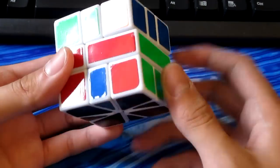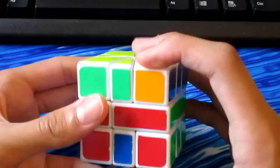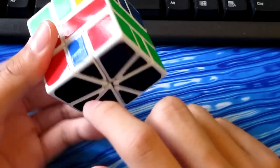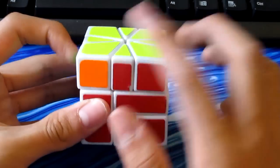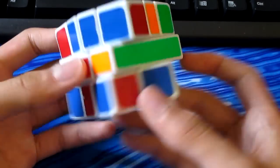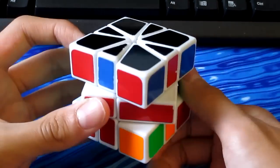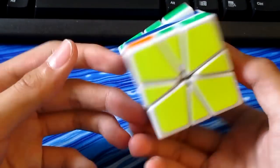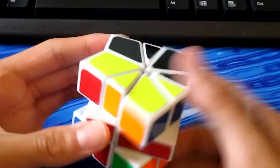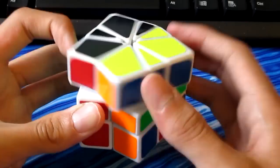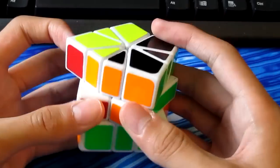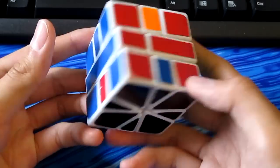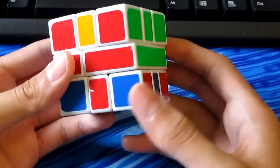Next is corner permutation. On the bottom face, there's no corners to permute since they're all good. But then the top face, you need to permute these two corners. So we will swap the layers with slash six six. And then we'll do the algorithm. And then I like to swap the layers again. All right.